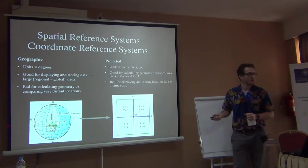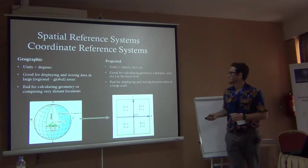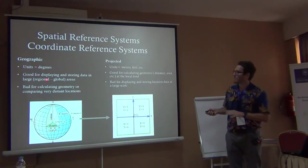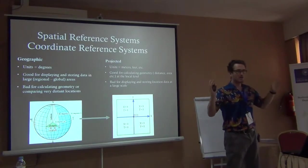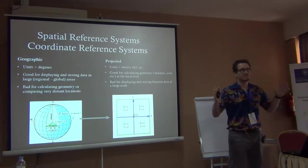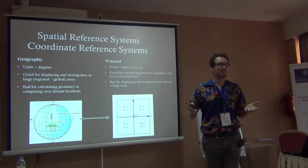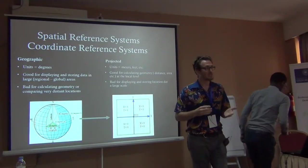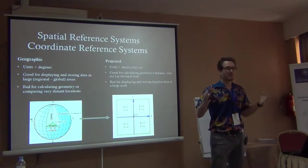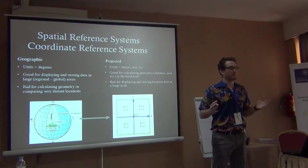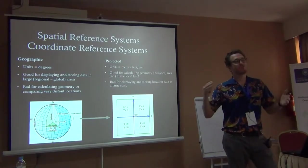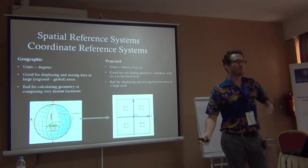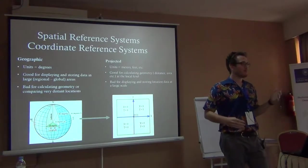We have to go from three-dimensional to two-dimensional. The geographic coordinate system is really good for displaying and storing data that covers large areas — this is why we use it to describe places on Earth. You can give latitude and longitude and immediately figure out where something is anywhere on Earth. But if I say the coordinates are 500 meters west and 500 meters north, what does that mean to you?